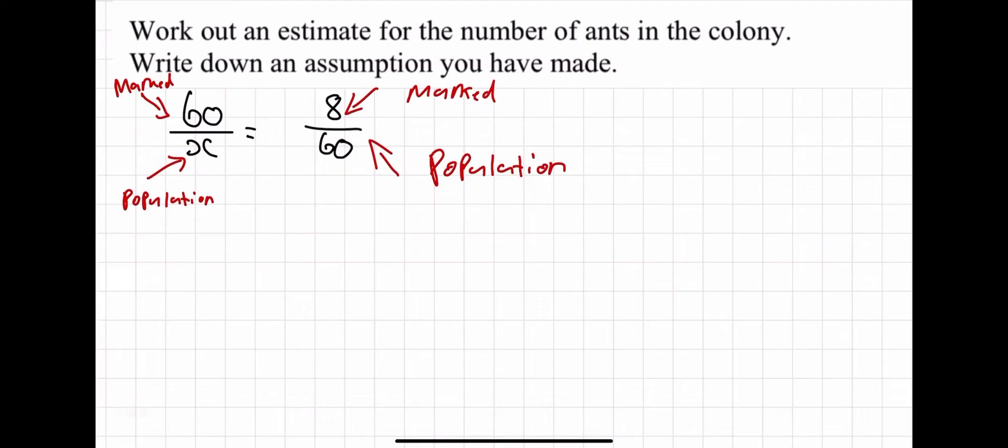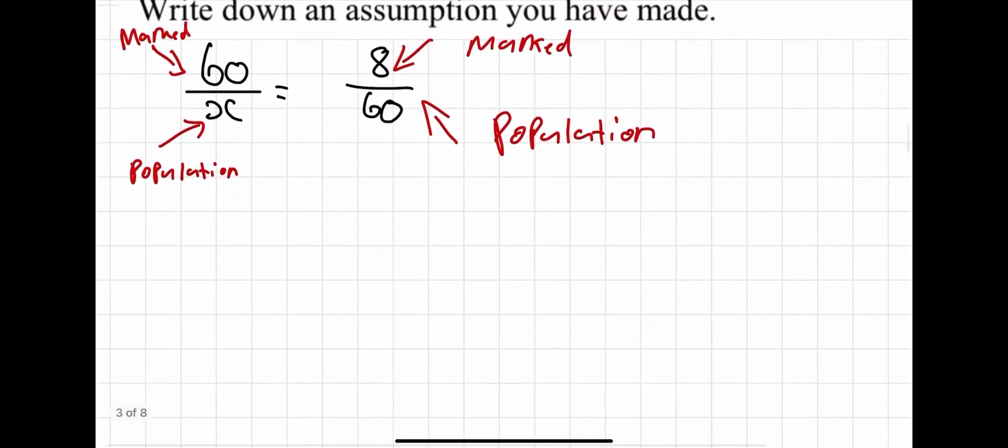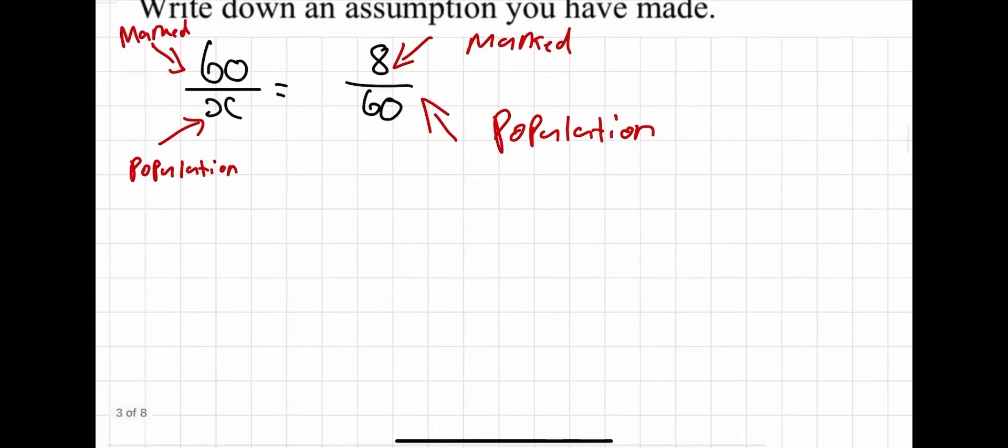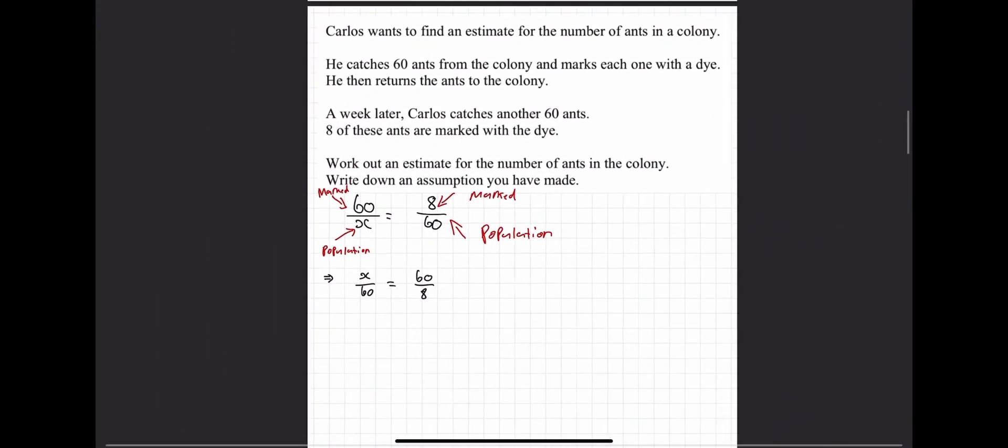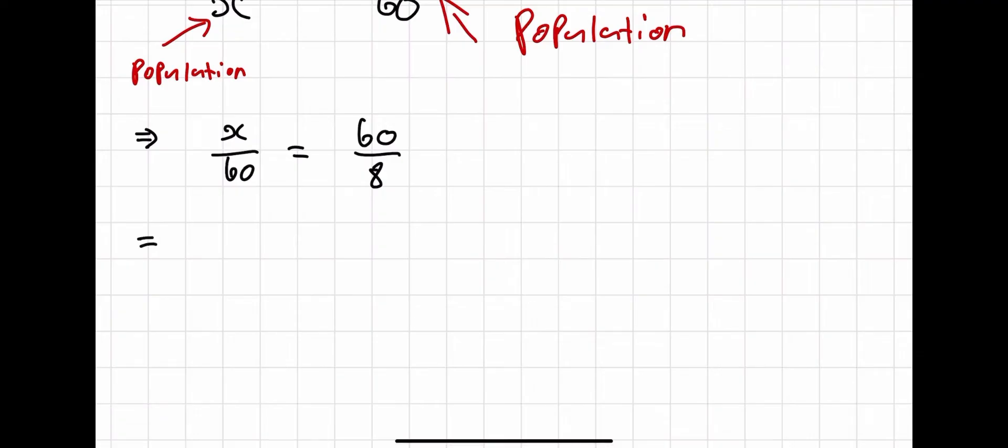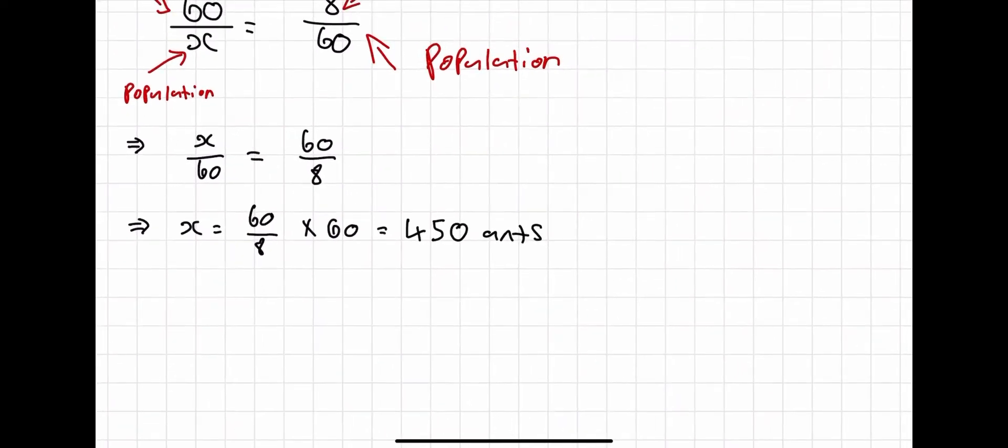So, now let's think, how can we find out what the population is? We just need to solve for x as if we were doing GCSE maths. So, what I'm going to do is I'm going to flip these fractions. So, I have x over 60 equals 60 over 8. And then what I'm going to do is I'm going to times both sides by 60. So, I get x on its own. And if I do that, I get 60 over 8 times 60. I type that into my calculator and I get my estimate is 450 ants is our population.